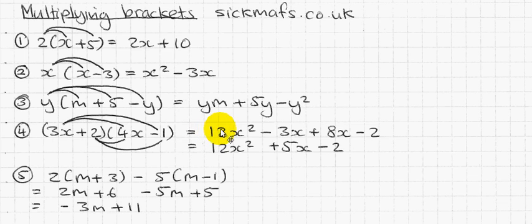Three x times four x is 12x squared. Three times four is twelve. X times x is x squared. That's why. And then we do 3x times minus one which is minus 3x. And then two times 4x which is 8x. And two times minus one which is minus two. So I've got 12x squared minus 3x plus 8x minus two.